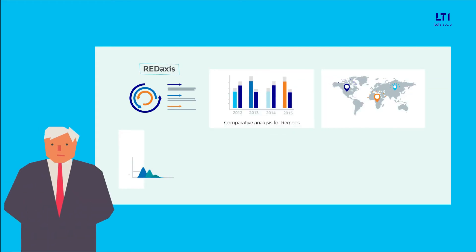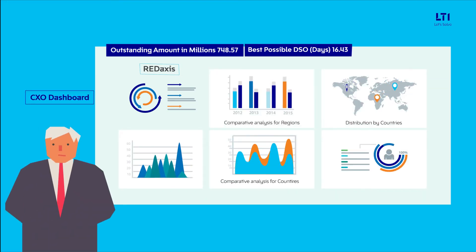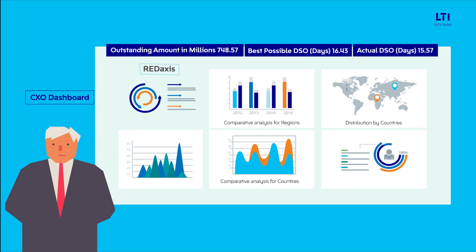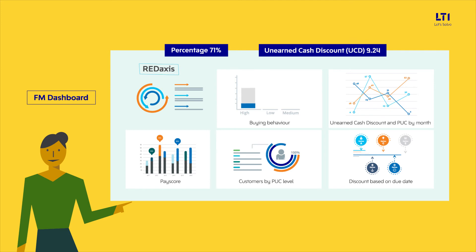Using RedAccess, CXOs would be able to explore potentials of DSO reduction for specific regions and customers. In case of revenue leakage, they can identify regions attributing to undue cash discounts. The financial manager's dashboard will give complete visibility into the collection process, thus enabling them to identify defaulting customers in their zone.